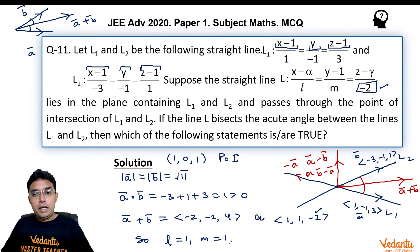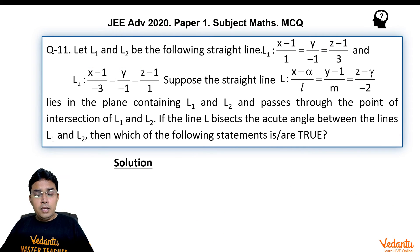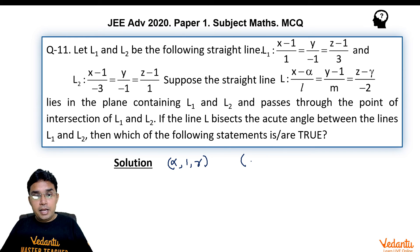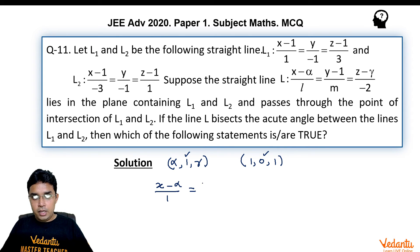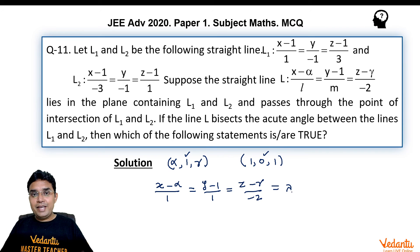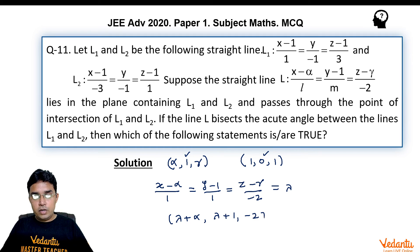Now we find α and γ. The line L passes through (α, 1, γ), which is different from the intersection point (1, 0, 1) since their y-coordinates differ. Writing line L as (x−α)/1 = (y−1)/1 = (z−γ)/(−2) = λ, a general point on L is (λ+α, λ+1, −2λ+γ).